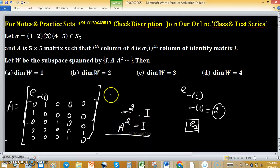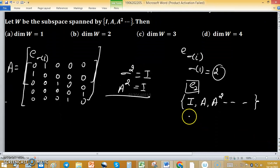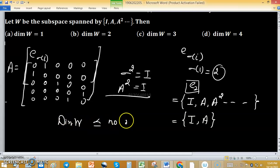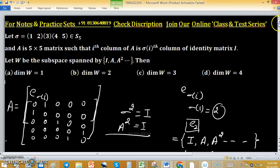Now W is spanned by the set {I, A, A², ...}. Indirectly we can write, because A² is identity, this spanning set is nothing but {I, A}, having two elements. We know that the dimension of a subspace never exceeds the number of spanning elements. So dimension of W, because this is spanned by two elements and these two elements are linearly independent, the dimension of W is 2. Option B is correct.